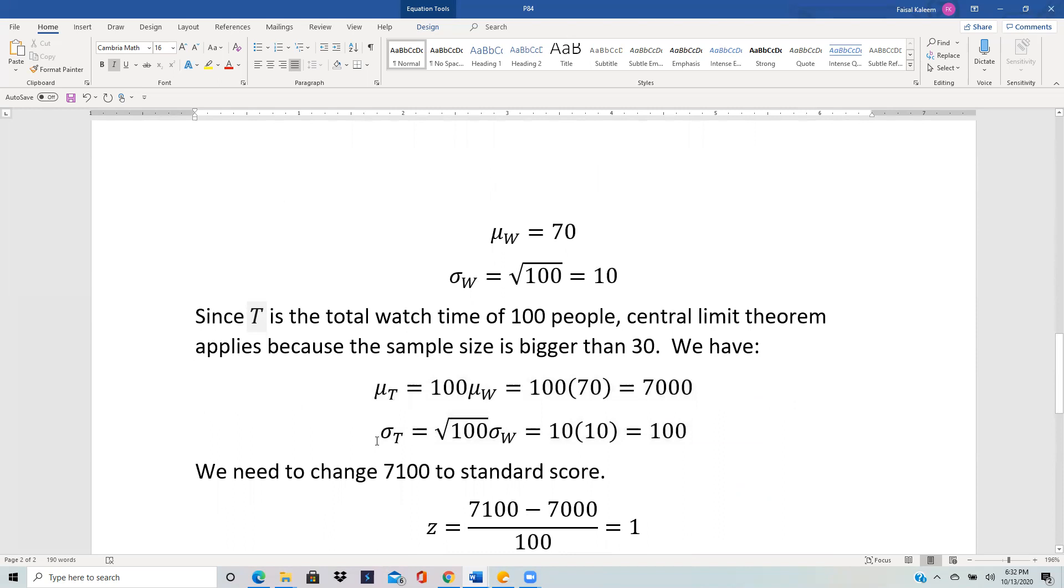The standard deviation is the square root of the sample size times the standard deviation of each person's watch time. So we get that to be 100.